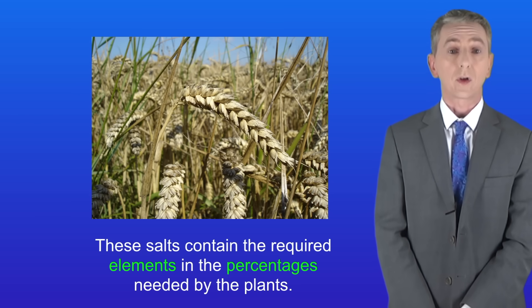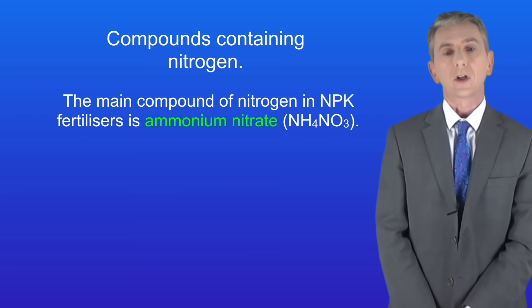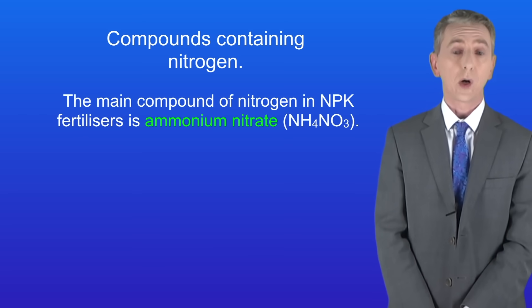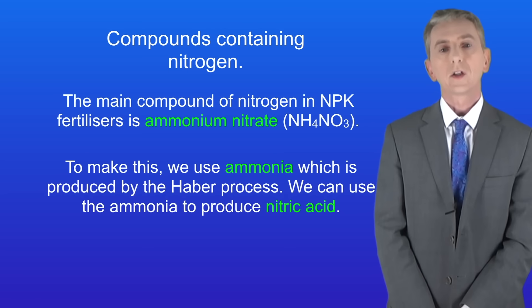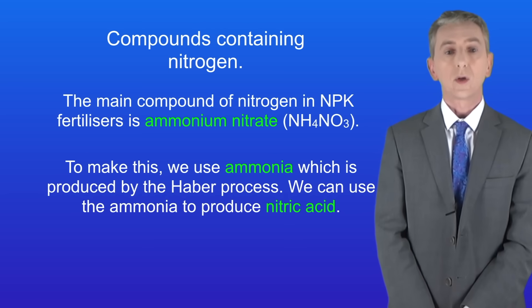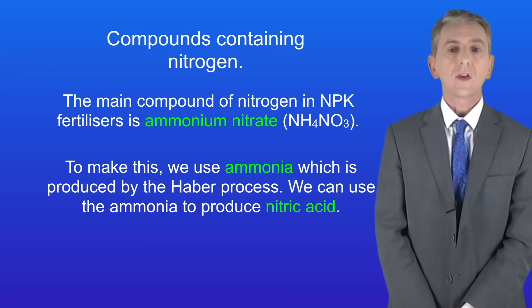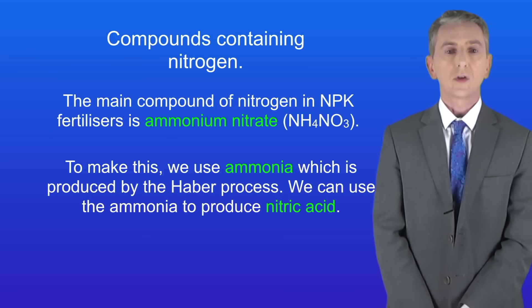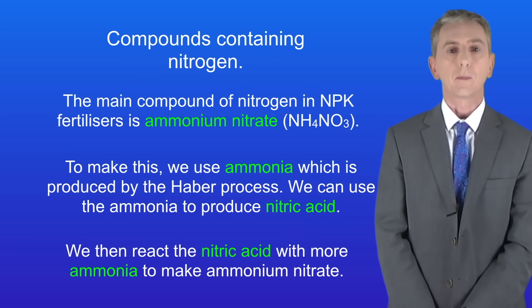We're going to start by looking at compounds of nitrogen. The main compound of nitrogen in NPK fertilizers is ammonium nitrate, which has the formula NH₄NO₃. To make this we use ammonia, which is produced by the Haber process. We can use the ammonia to produce nitric acid, and we then react the nitric acid with more ammonia to make ammonium nitrate.